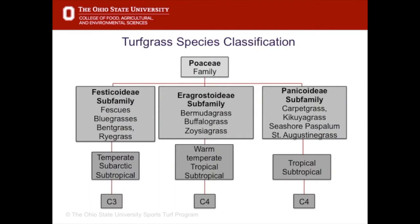Warm season grasses are in the Agrosoideae subfamily and the Panicoideae subfamily and these include Bermuda grass, Buffalo grass, Zoysia grass, Carpet grass, Kikuyu grass, Seashore Paspalum, and St. Augustine grass.